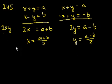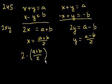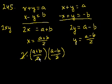And now we can figure out what 2xy is equal to. 2xy equals 2 times a plus b over 2 times a minus b over 2. This 2 will cancel out with one of these 2's, and we're left with a plus b times a minus b, which is a squared minus b squared over 2, which is choice A.